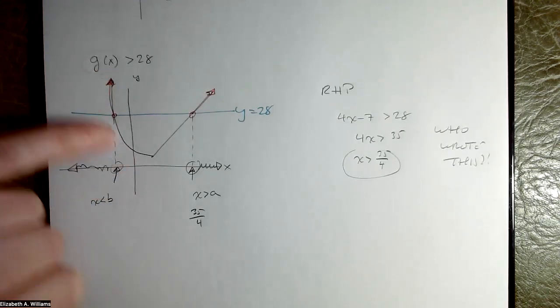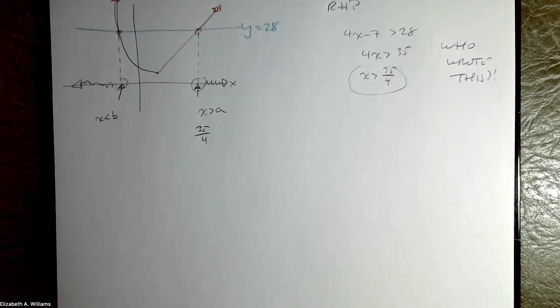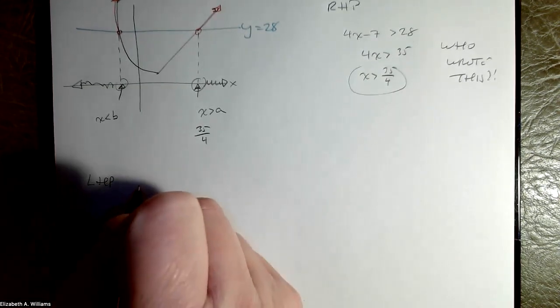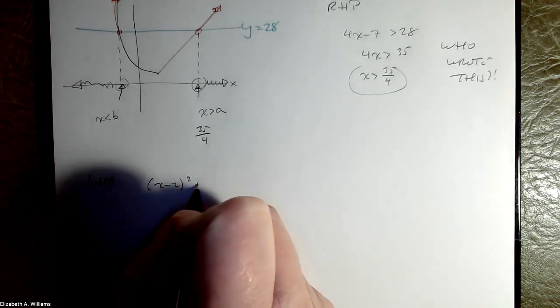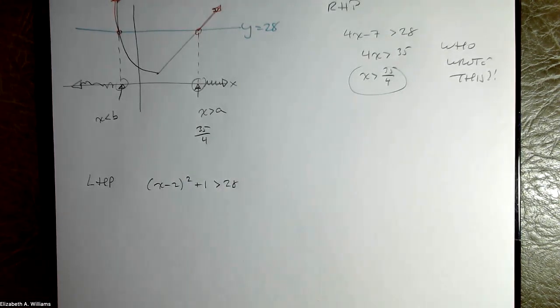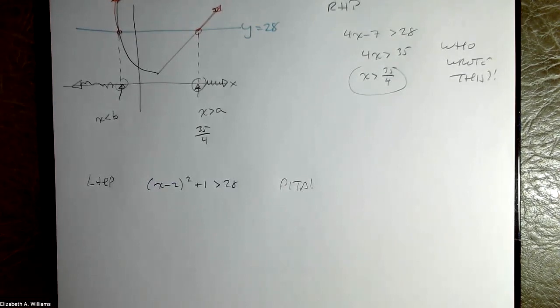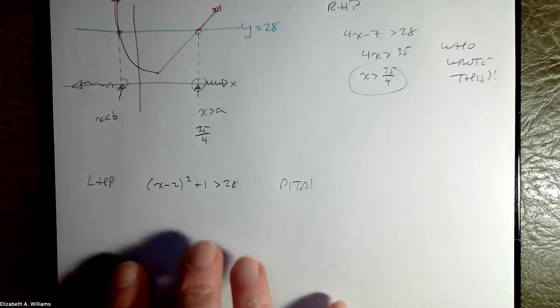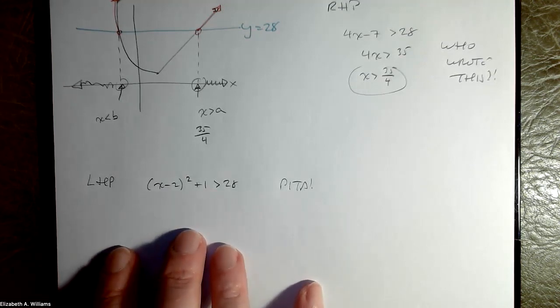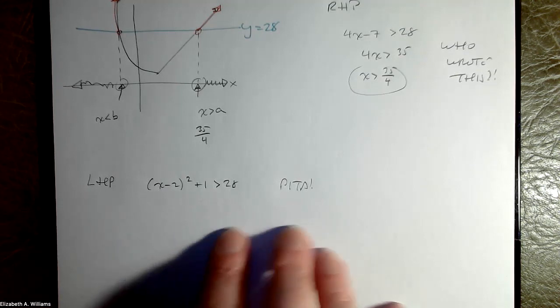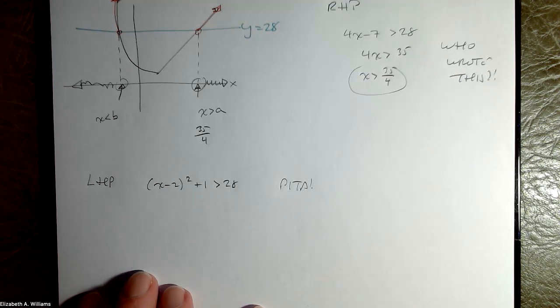The bog was this left hand part. Okay, so I'll do it down here. Our left hand part, okay, was x minus two quantity squared add one being bigger than 28. Now quadratic inequalities are a complete pain in the ass. Pardon my French. So the sane way to deal with these things is graphically. And I'll show you how to deal with these suckers.